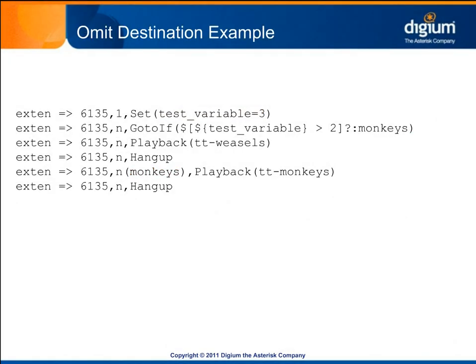It is also valid to omit one of the conditional destinations. Here we've changed the first priority to set the test variable to 3 instead of 1, and we remove the priority label of weasels in the GoToIf priority. Notice that there's nothing between the question mark and the colon, meaning that we're not specifying a destination to route if the expression evaluates to true. When there's no destination listed for an evaluation result, the call will simply move to the next priority in the dial plan. In this case, with the value of test variable set to 3, the expression is true. There's no destination specified for the true condition, so the call will move down to the next priority and ttweasels will be played.